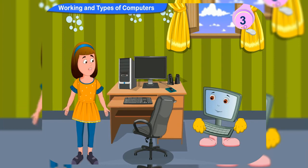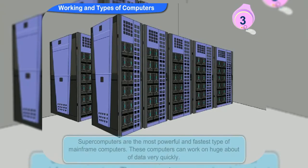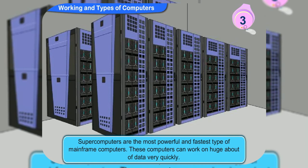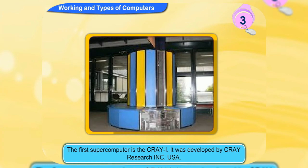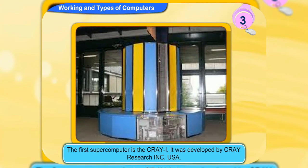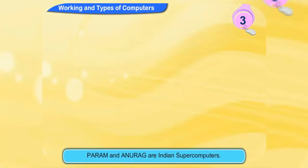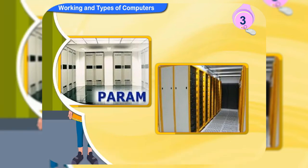Our teacher also said something about supercomputers. What are they? Supercomputers are the most powerful and fastest type of mainframe computers. These computers can work on huge amounts of data very quickly. The first supercomputer is the Cray, developed by Cray Research, Inc., USA. Yes, Param and Anurag are Indian supercomputers.